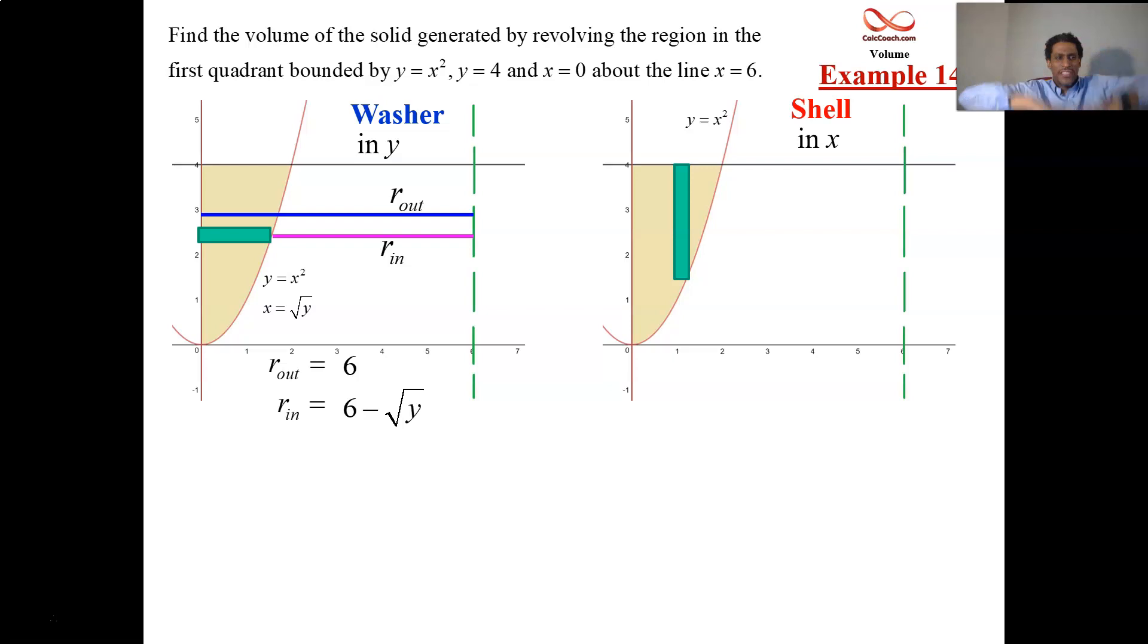What about the bounds? You start at 0 for y, and you're done when you get to y equals 4. That's the setup for washer, the setup for shell. The radius attaches the axis to the rectangle, and so the radius is going to be 6 take away x. These are backwards. Sorry about that. The radius is 6 minus x, and the height is 4 minus x squared.